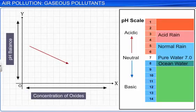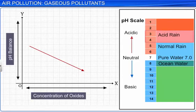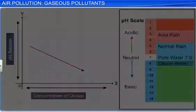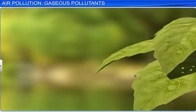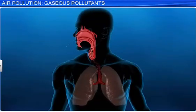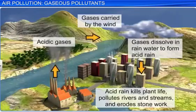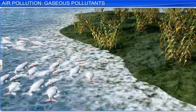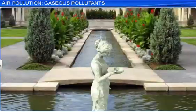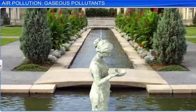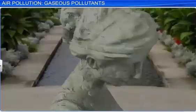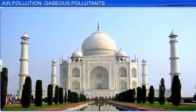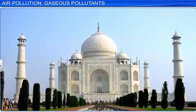An increase in the level of the oxides of sulfur and nitrogen makes the pH value of rainwater drop below 5.6, causing acid rain. Acid rain washes away nutrients from plants and is harmful for trees and agriculture. It causes respiratory diseases in humans and animals. Acid rain flows to rivers, lakes and oceans and harms the ecosystem in them. The acid particles corrode metals and stones, damaging structures made of them. The Taj Mahal, the beautiful monument in India, is being disfigured and rendered lustreless by acid rain.